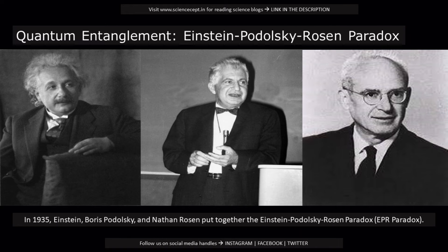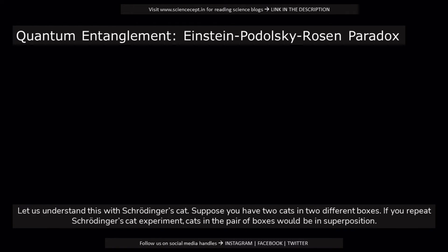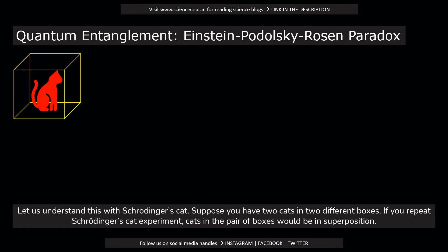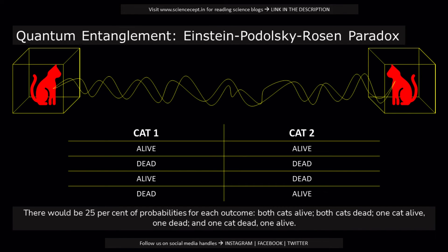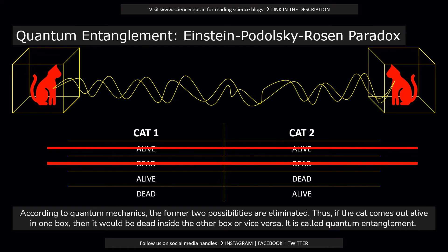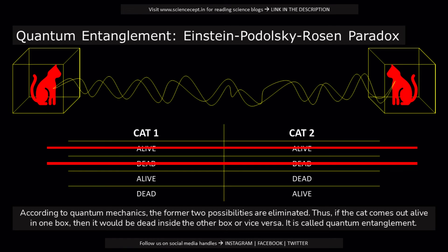In 1935, Einstein, Boris Podolsky, and Nathan Rosen put together the Einstein-Podolsky-Rosen paradox, or EPR paradox. Suppose you have two cats in two different boxes. If you repeat Schrödinger's Cat experiment, the cats in the pair of boxes would be in superposition, with a 25% probability for each outcome: both cats alive, both cats dead, one cat alive and one dead, or one cat dead and one alive. According to quantum mechanics, the former two possibilities are eliminated. Thus, if the cat comes out alive in one box, it would be dead inside the other box, or vice versa. This is called quantum entanglement.